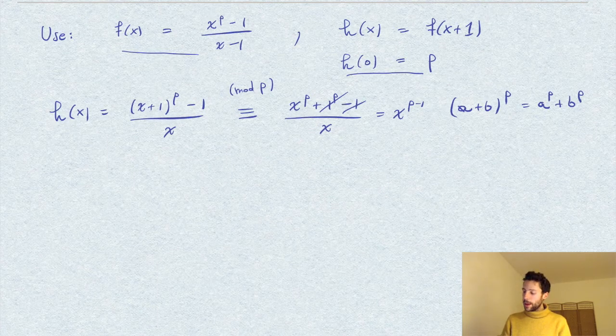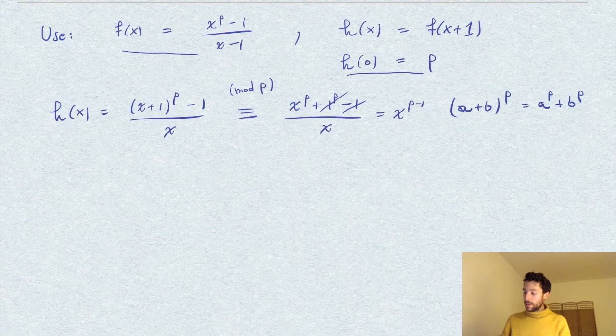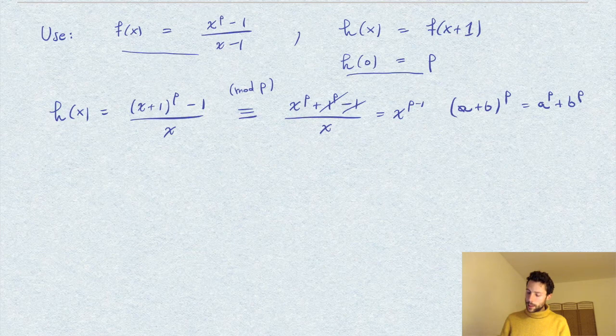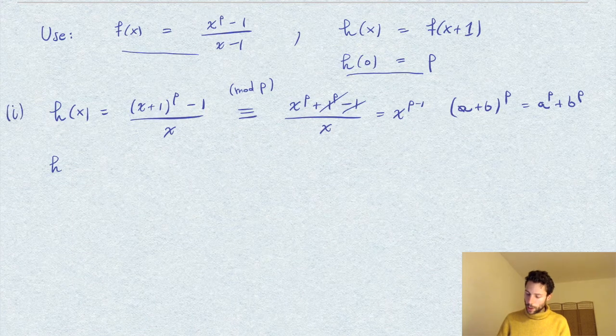And we already noticed that for the constant term, this is divisible by p but not by p squared. So we could conclude here that h is irreducible and therefore f is irreducible. Of course, the other way—a bit more direct—is just to expand this computation. So if you want, this is the first way, and this is the second way.